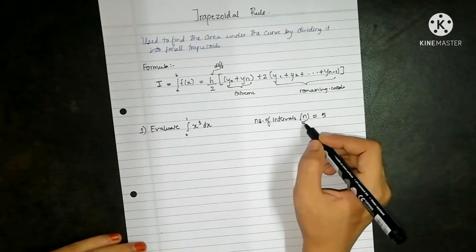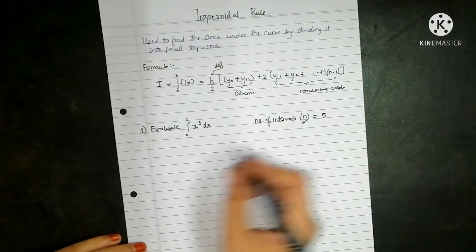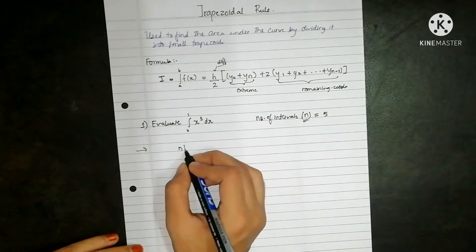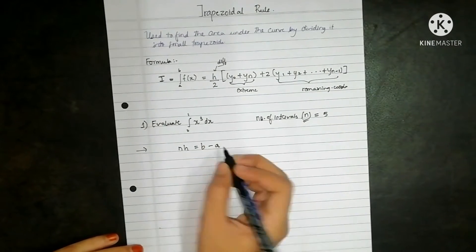Either you will have the value of n in the question or the value of h. So we can find the other value as n times h is equal to b minus a.